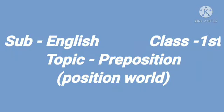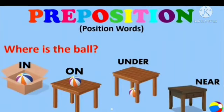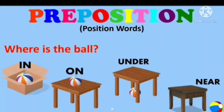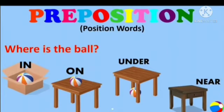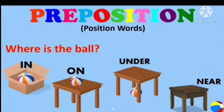Today's topic is prepositions, or position words. Can you see these four pictures? You can see a common ball. The question is: where is the ball? In picture number one, the ball is inside a box. In picture number two, the ball is on the table. Picture number three, the ball is under the table. And picture number four, the ball is near the table.